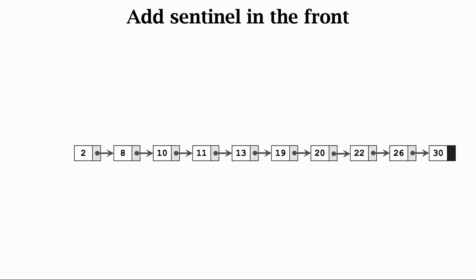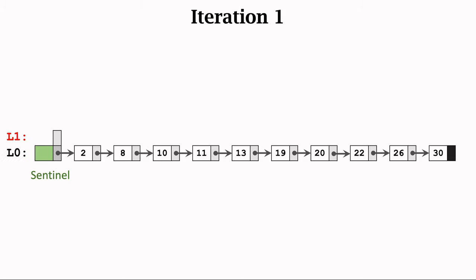Let's build such a skip list upon the standard linked list. A node called Sentinel is added to the left of the first node. This linked list is called layer 0, or L0. Now let's build the L1 linked list — it is a layer above L0. Here, L0 and L1 refer to the pointers, not the data. In L0, all the nodes are linked and there is no skip. Differently, L1 has skips. Now let's add pointers to L1.